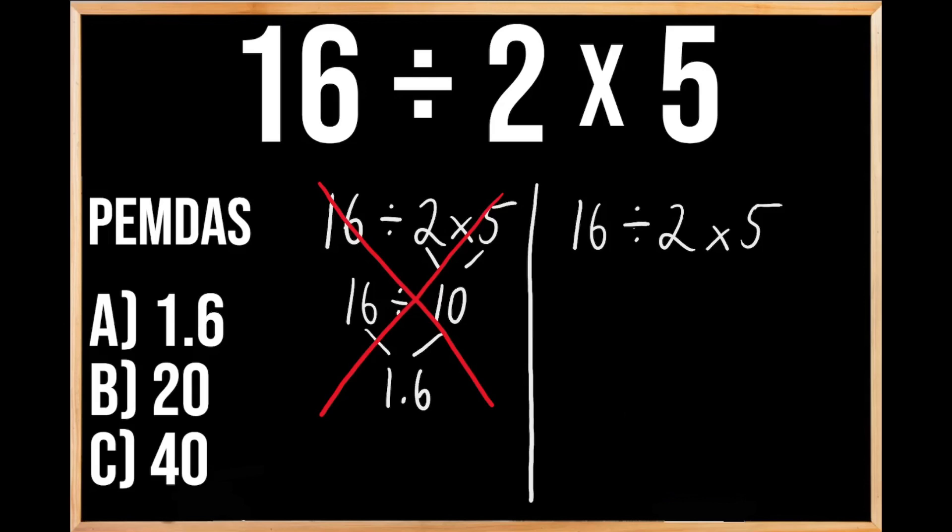Now with this priority, multiplication and division are the same priority. So whenever you're solving a problem that has both division and multiplication, you're going to solve it from left to right, because multiplication and division are the same priority.